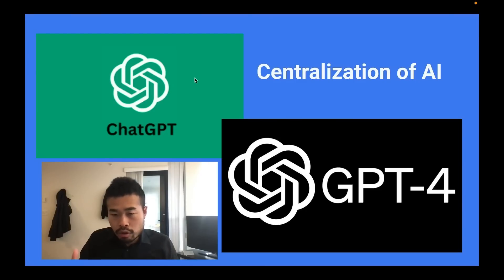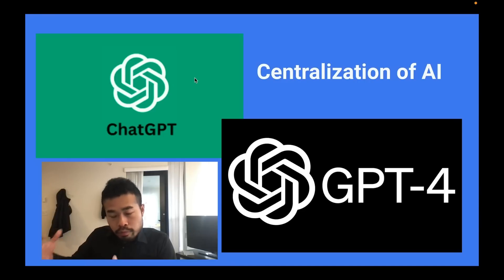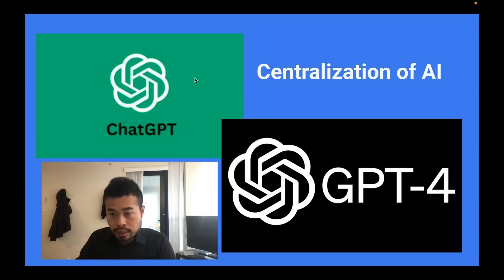Today we're going to talk about how you can train your own ChatGPT GPT-4 comparable models on a budget under $100. We will be talking about the centralization of AI and the manipulation of AI. OpenAI keeps building very big models and there seems to be a solution to every NLP problem, so a lot of people working on many different projects suddenly become irrelevant because ChatGPT and GPT-4 can solve most of the problems without any NLP.